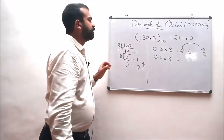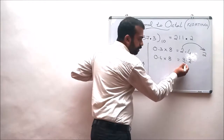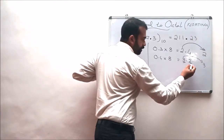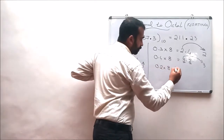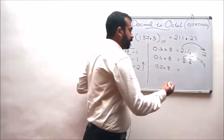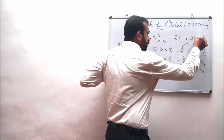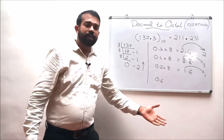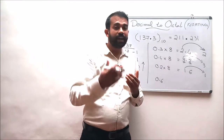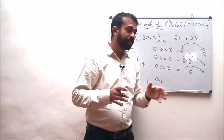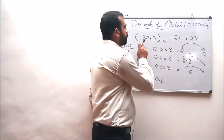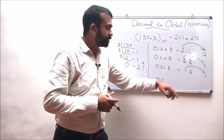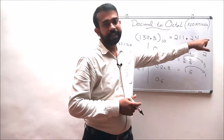0.4 into 8 gives 3.2. The whole number portion 3 is taken into the result, and the remaining 0.2 is multiplied again with 8, giving 1.6. The whole number portion 1 is taken, and the remaining 0.6 is multiplied again with 8. This step can be continued based on the required precision. In this example, I am considering up to 3 fractional points, so we stop here. The decimal number 137.3 can be represented in octal as 211.231 to the base 8.